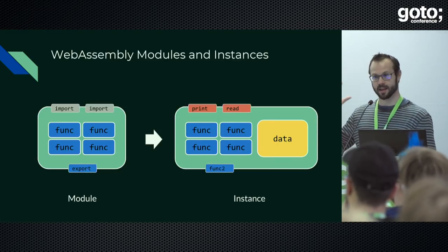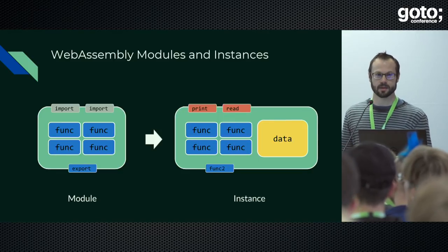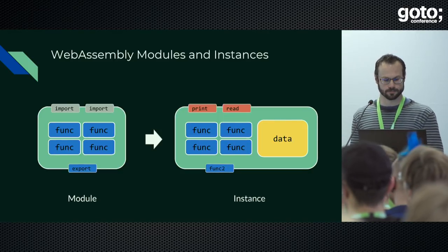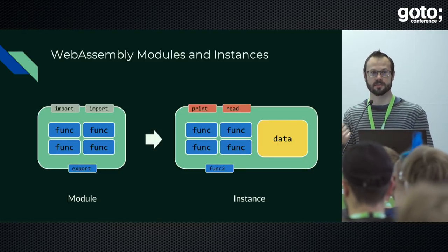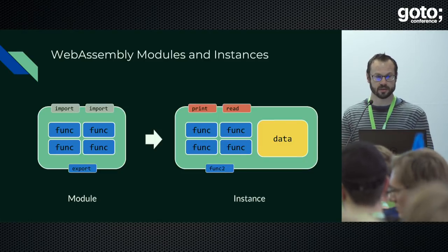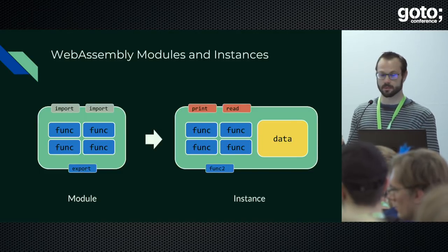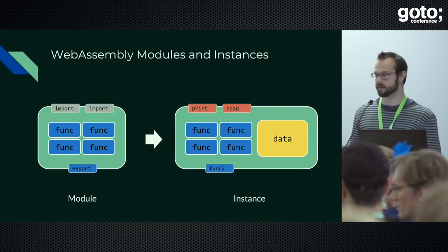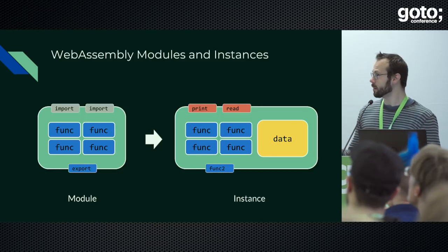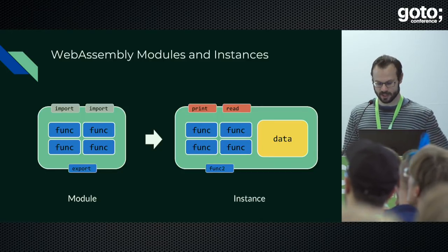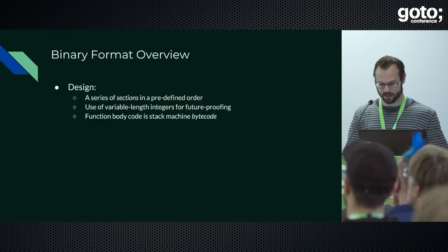A module has just functions inside, and everything it needs from outside is explicitly imported. It can also export functions — anything that is functionality such as the main function or subroutines to decode images. Instantiation produces an instance, and the instance has the actual live data in it.